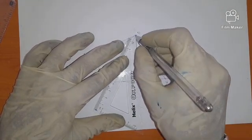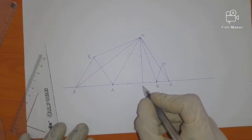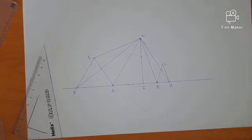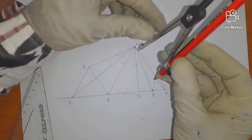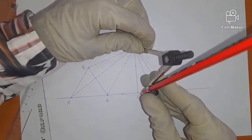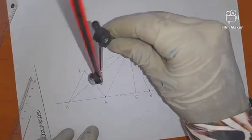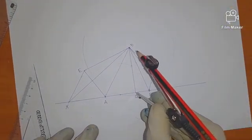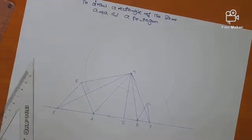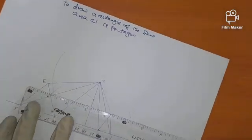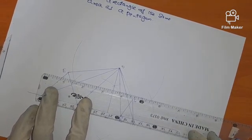We call the foot of the perpendicular E. Now we are going to bisect line DE. We place the compass at D and at E, run arcs, cross arcs, then draw that straight line — the bisector of DE.